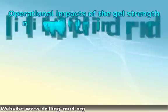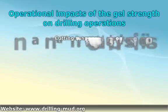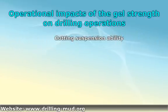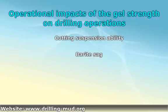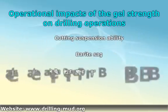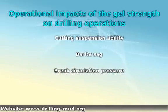Operational impacts of gel strength on drilling operations are as follows. First, cutting suspension ability. Low gel strength drilling mud will not be able to efficiently suspend cuttings; therefore, the cuttings will quickly drop once pumps are shut down. This can lead to several problems such as stuck pipe, hole pack-off, and accumulation of cutting beds.